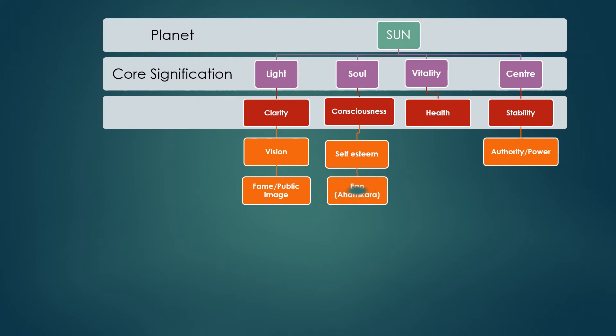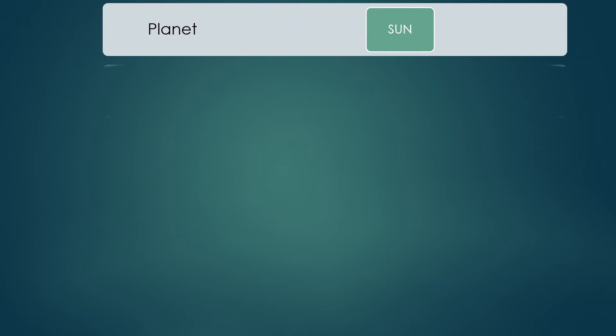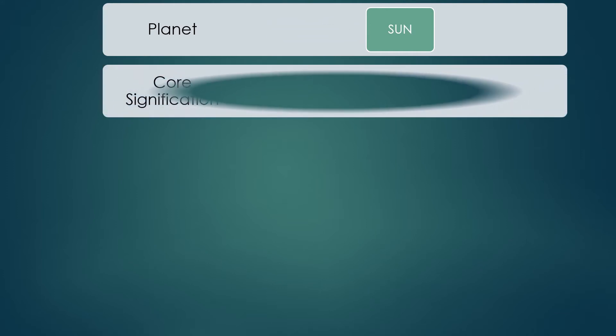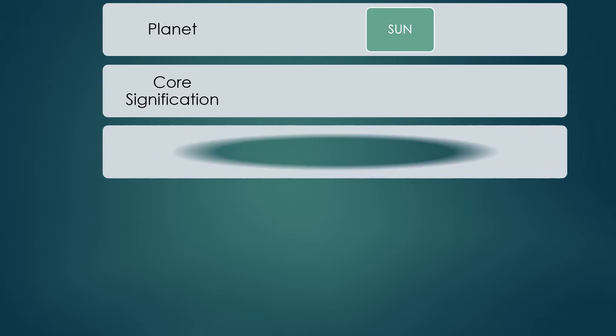This point becomes important because Sun is also related with the government. An authoritative figure has a vision. Sun gives vision. Sun is always about day — wherever there is a sunrise, there is day, because it throws its light onto that part of the world.